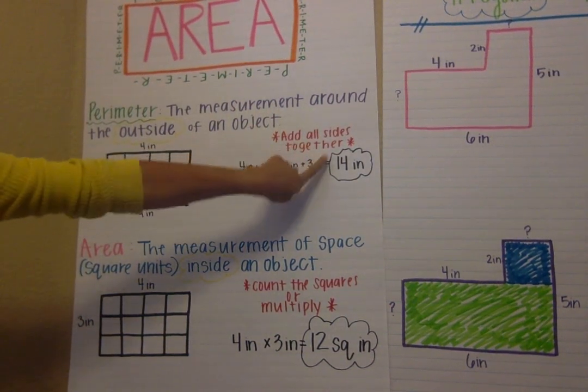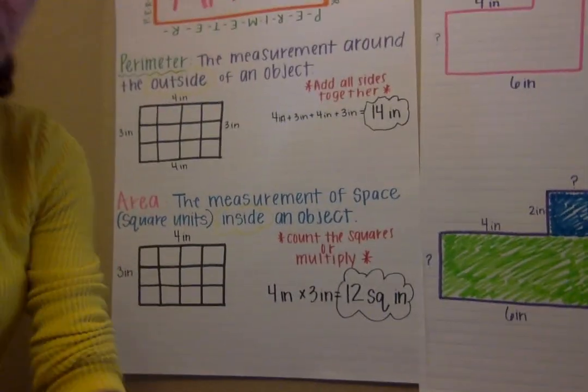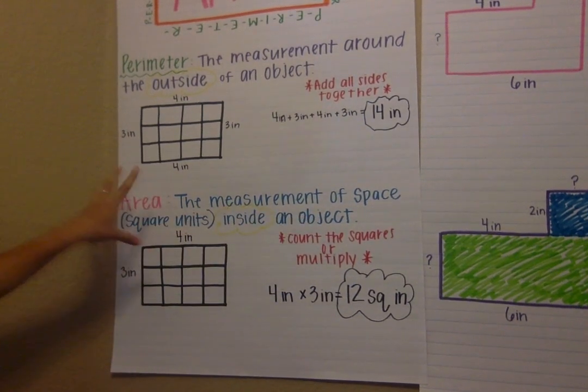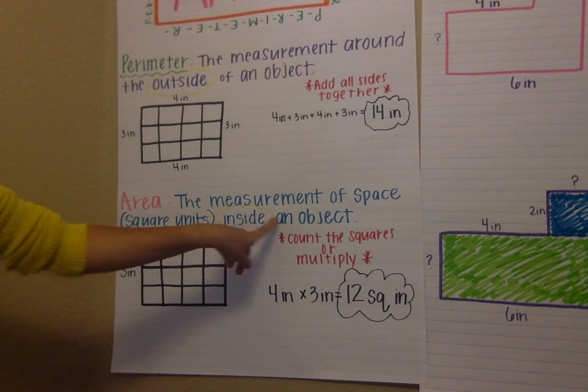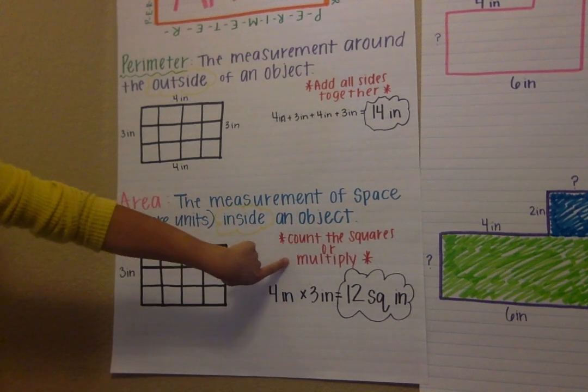To find the perimeter we add all the sides together, and that is different from area because area is the measurement of the space or square units inside of an object. You can either count all the squares or you can multiply.